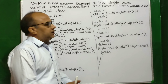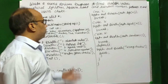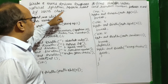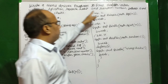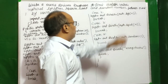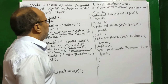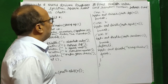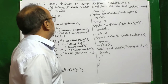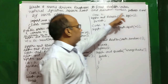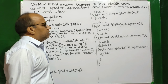Menu-driven programming is going on. Menu-driven programming is a program that came in 2006. Write a menu-driven program to find absolute value, natural logarithm, square root, and a random number between 0 and 1, according to user's choice.